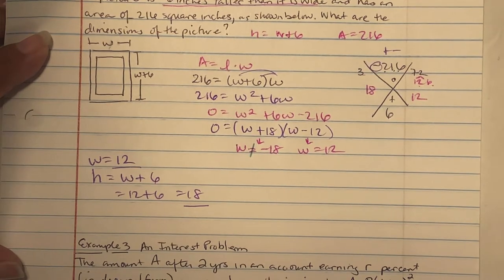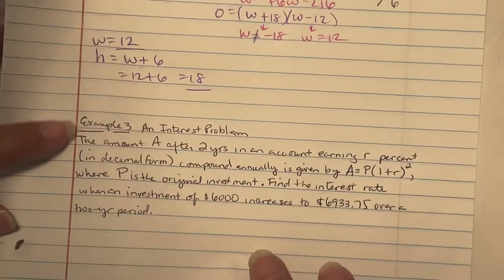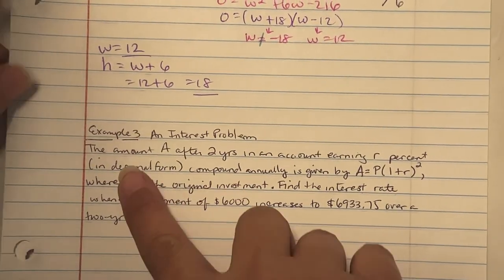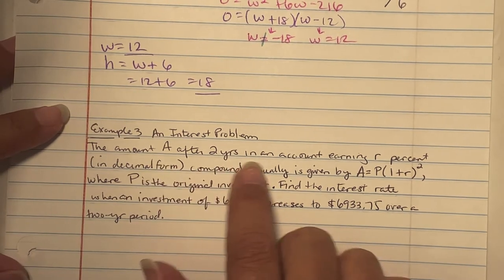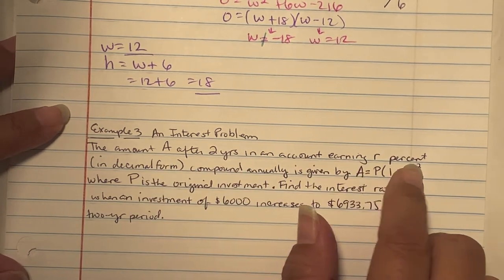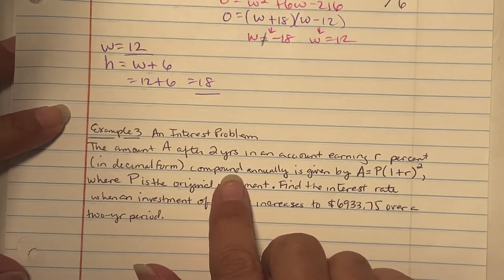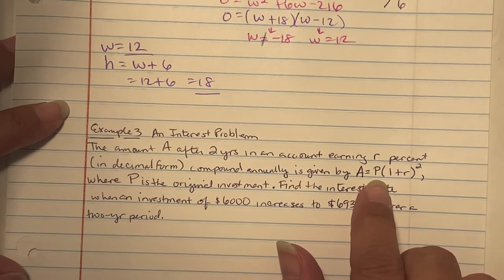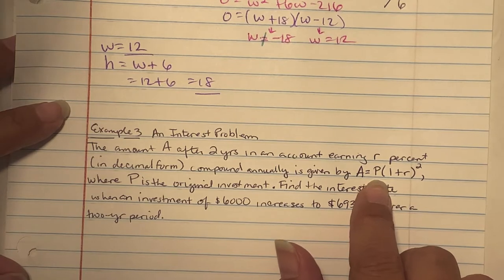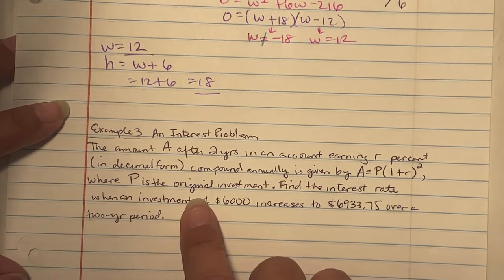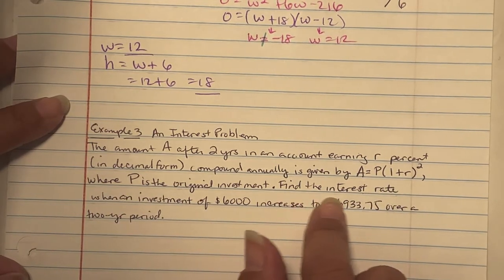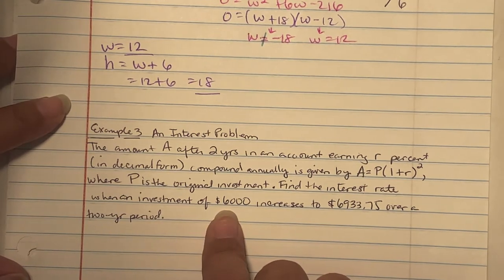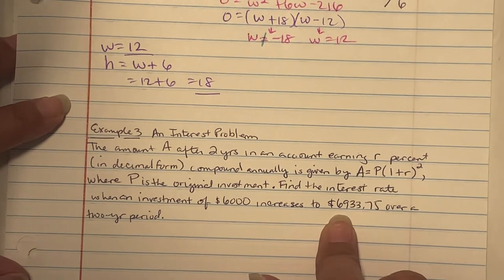Example 3 is an interest problem. The amount A after two years in an account earning R percent in decimal form compounded annually is given by A equals P times one plus R raised to the power of two, where P is the original investment or principal. Find the interest rate when an investment of $6,000 increases to $6,933.75 over a two-year period.